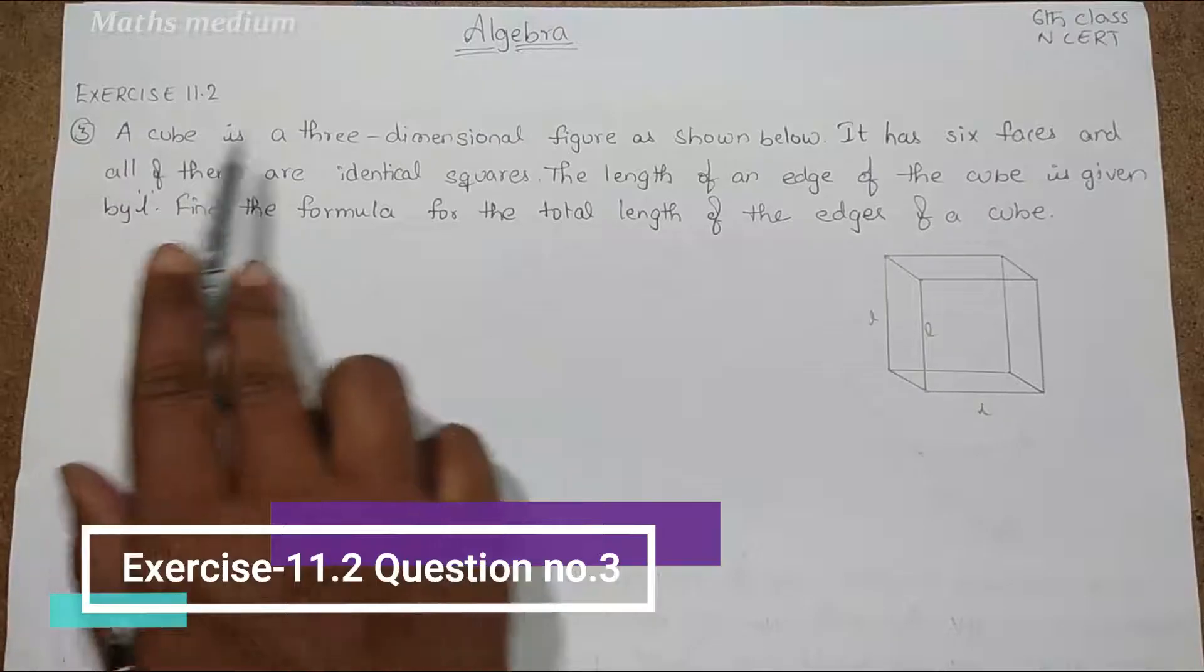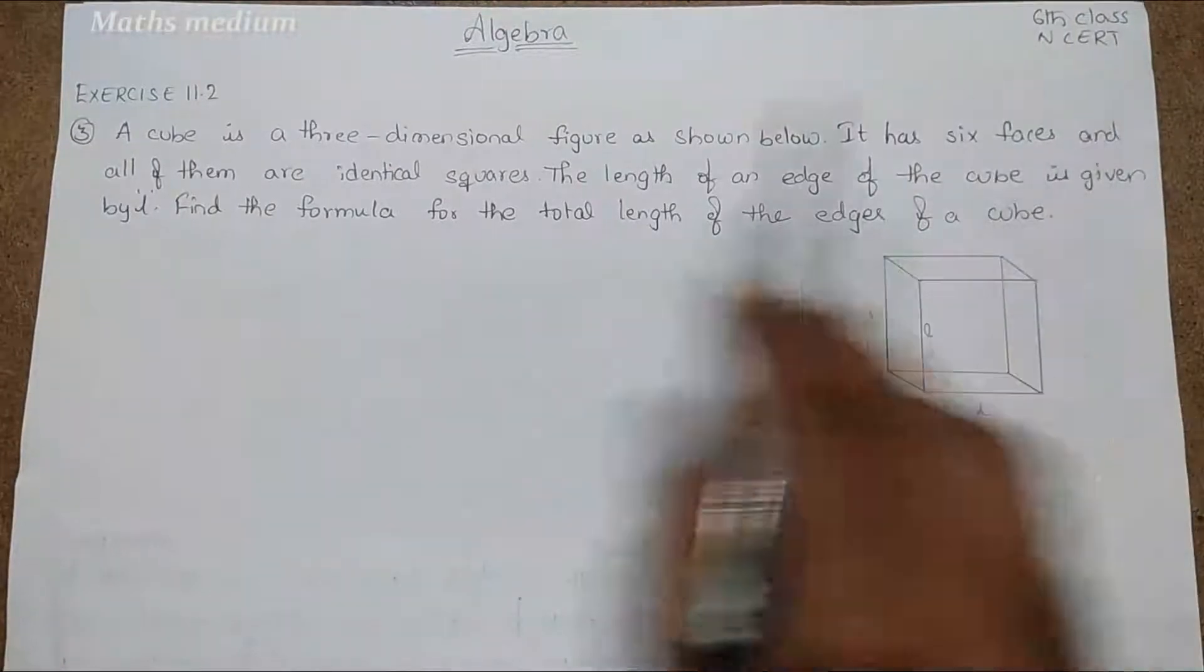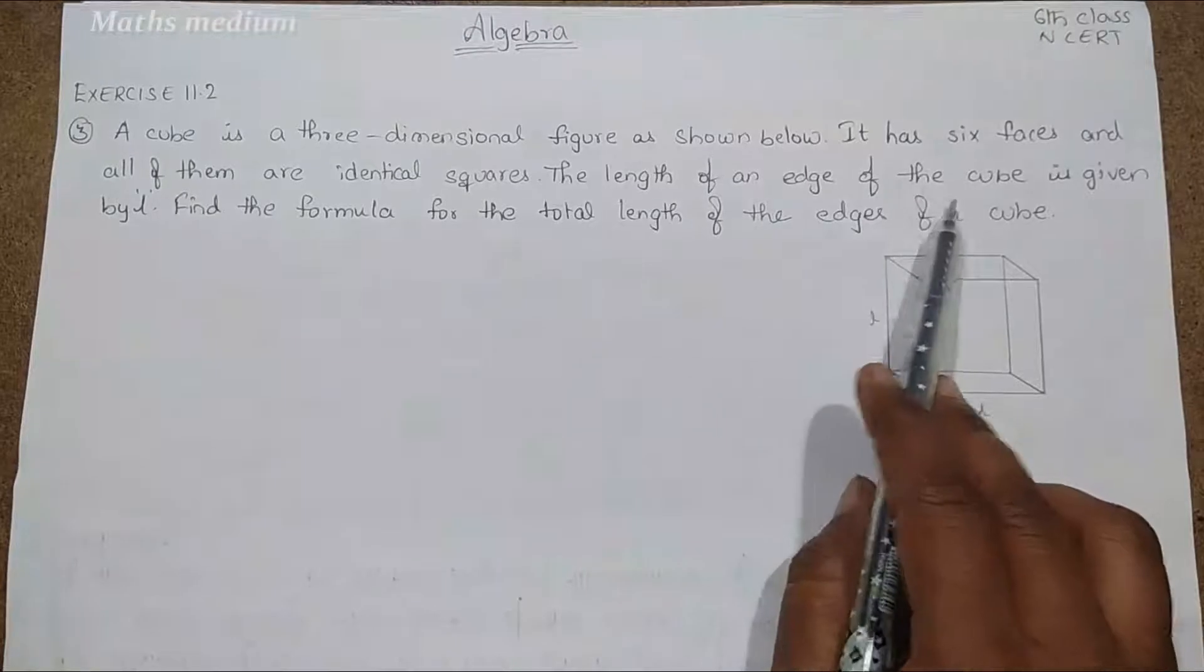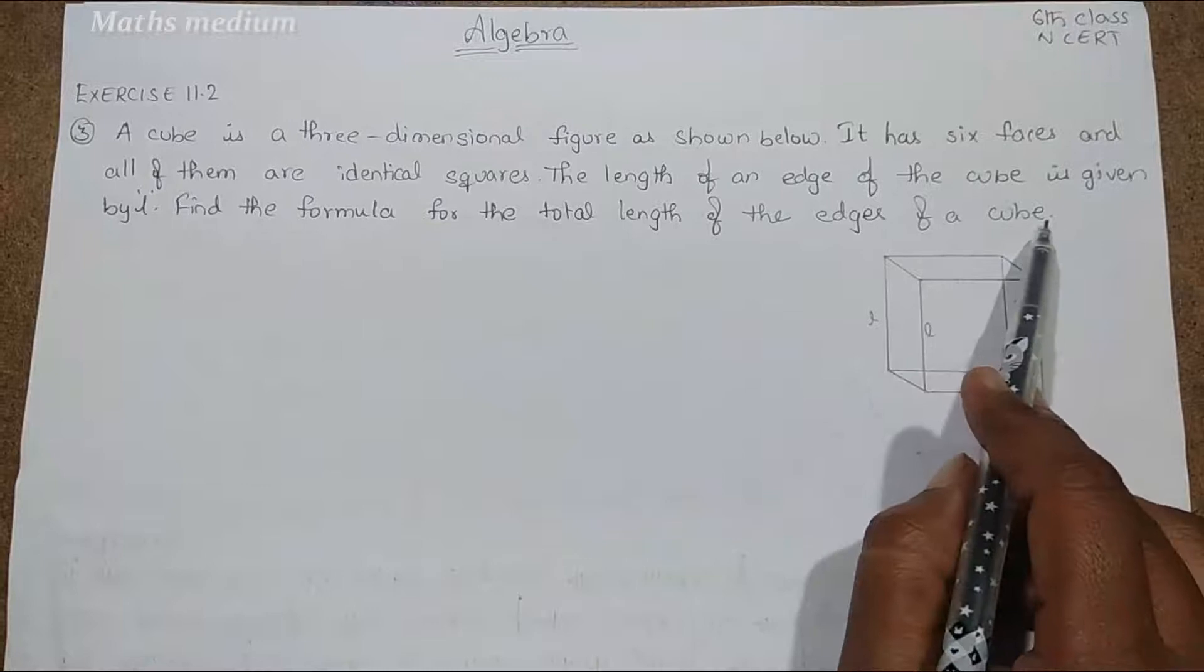Question number 3. A cube is a three-dimensional figure as shown below. It has six faces and all of them are identical squares. The length of an edge of the cube is given by L. Find the formula for the total length of the edges of the cube.